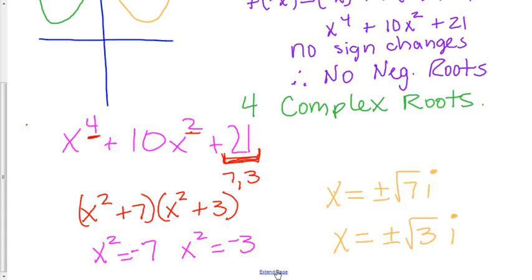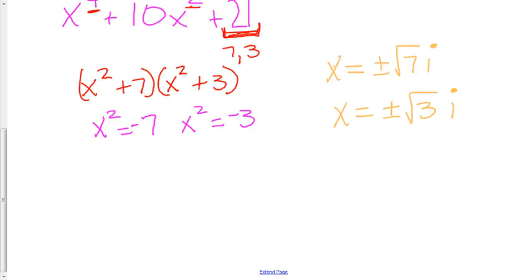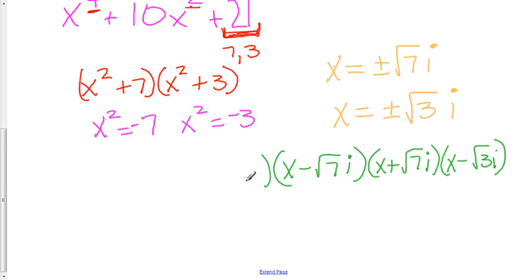If you were going to write these as linear factors, you would write x minus the square root of seven i, x plus the square root of seven i, x minus the square root of three i, and x plus the square root of three i.